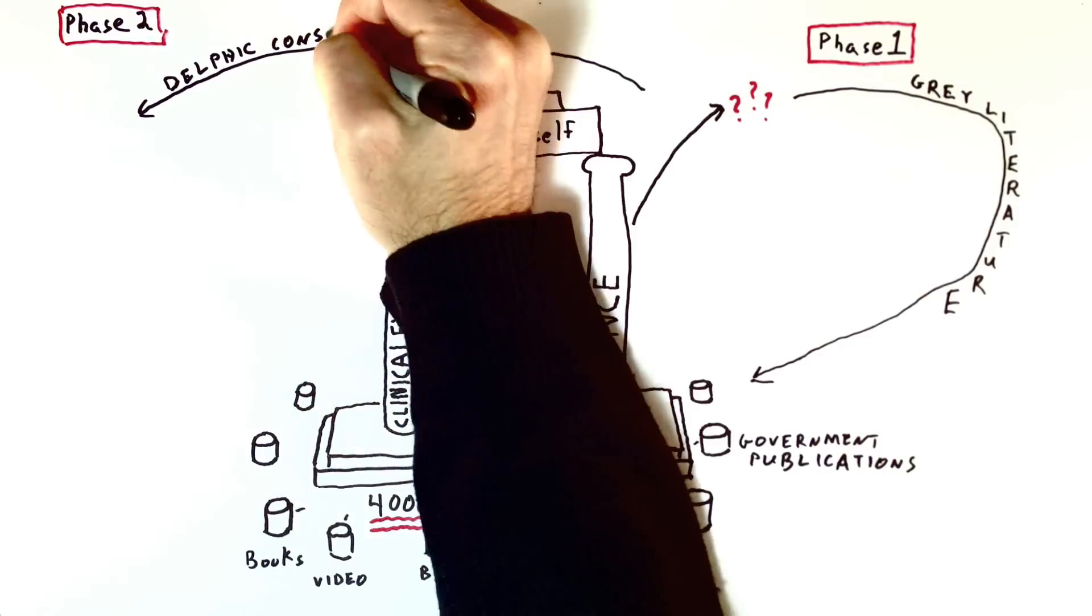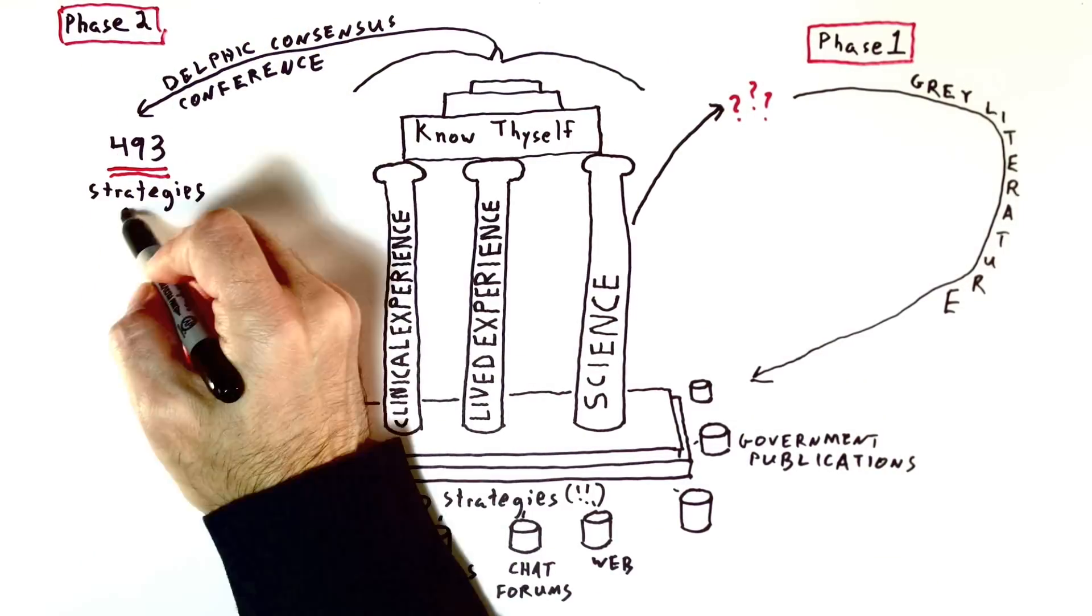Phase 2, the Delphi Consensus Conference, boiled this down to 493 strategies.